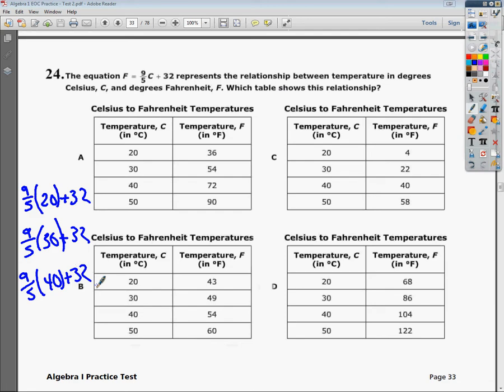So if I do 9 fifths times 20 plus... plus 32, I don't know what I was thinking. This gives me 68.